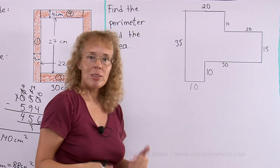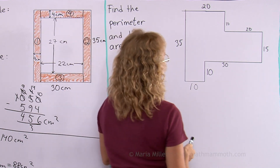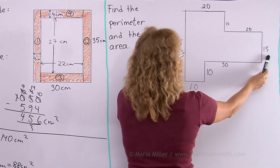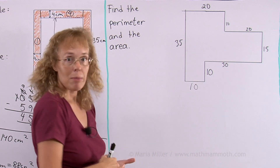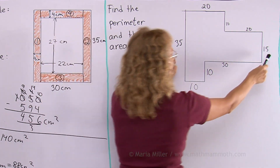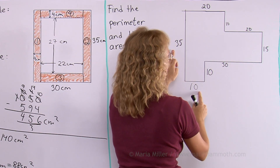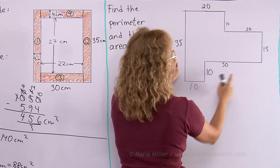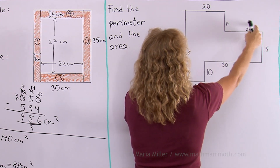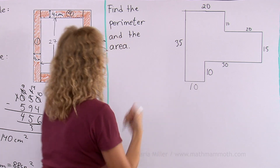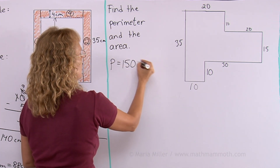Now we are ready to calculate the perimeter — just add up all the numbers. These two are easy to add together first because they make 50. So I have 50, and then 30 and 40 give another 50, and then there's another 50 from the remaining three sides. 50 and 50 and 50 is 150. The perimeter is 150 units.